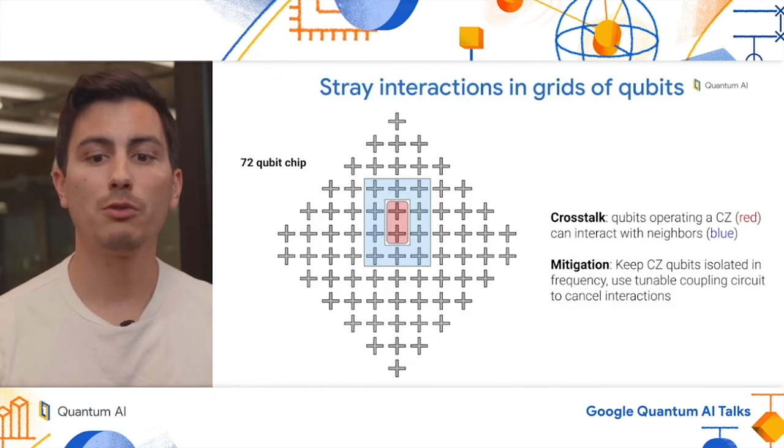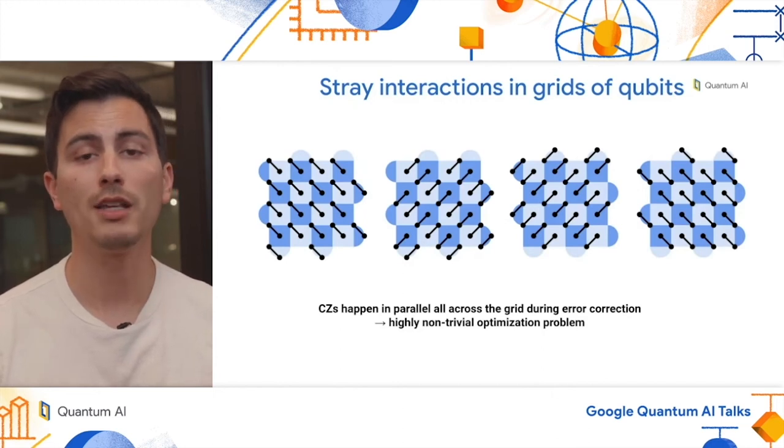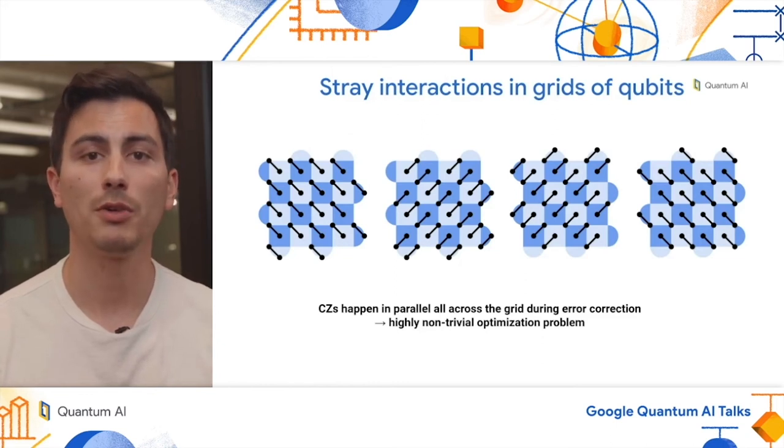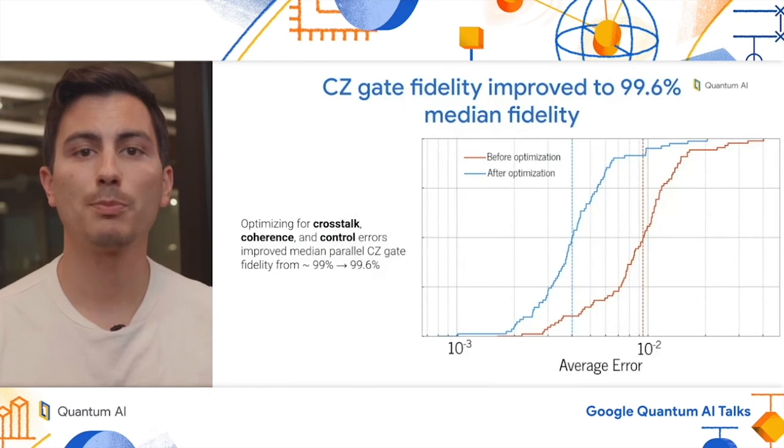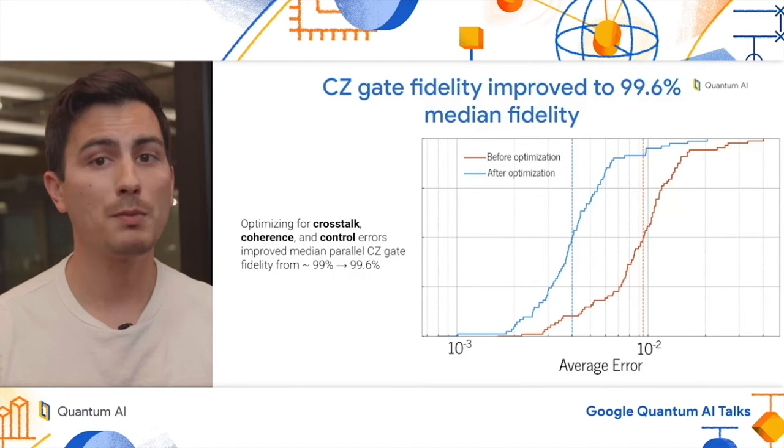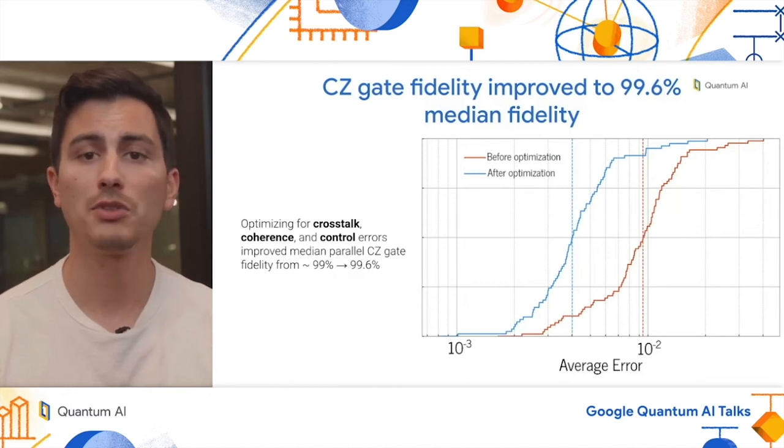So our mitigation strategy will be to keep qubits isolated in frequency space, and use our tunable coupling circuit to null all unwanted interactions. Now, of course, this is only the case for a single CZ. In the error correction circuit, we're doing many CZs all at once in parallel. So this happens to become a highly non-trivial system optimization problem. And for more details on how we actually do this optimization, I recommend tuning into Sabrina Hong's presentation tomorrow. When we first started our experiment, the average CZ fidelity was around 99%. Now, by optimizing for crosstalk, coherence, and control errors, we were able to improve the median CZ gate fidelity from 99% to around 99.6%, a substantial improvement.